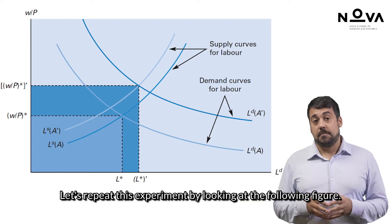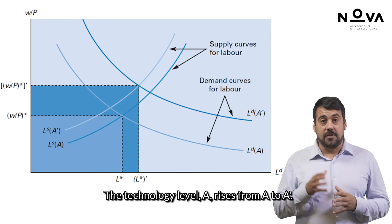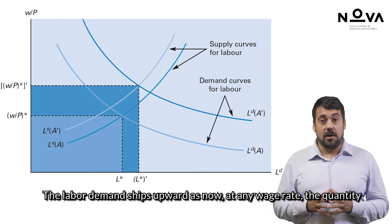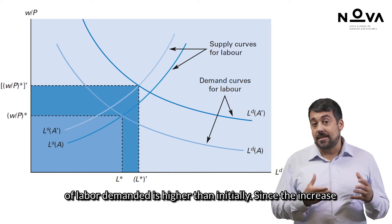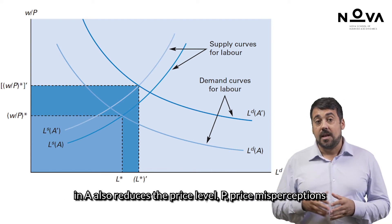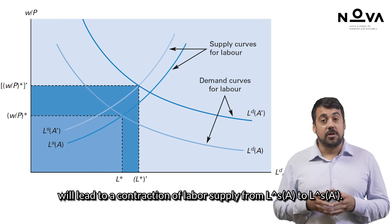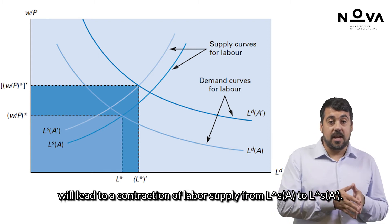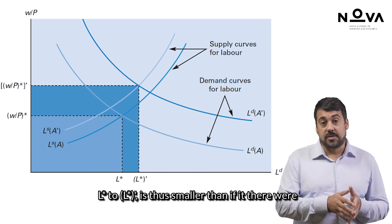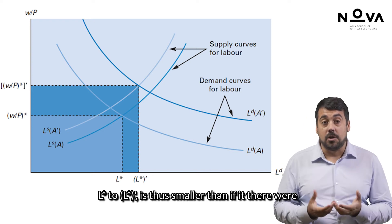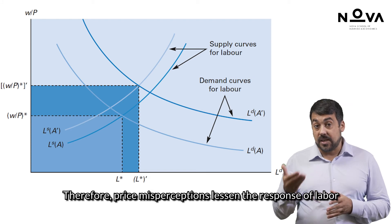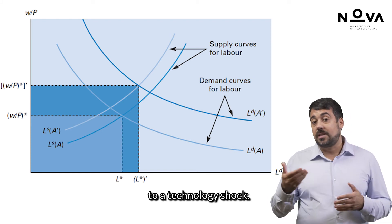Let's repeat this experiment by looking at the following figure. The technology level A rises from A to A prime. The labour demand shifts upward, as now, at any wage rate, the quantity of labour demanded is higher than initially. Since the increase in A also reduces the price level P, price misperceptions will lead to a contraction of labour supply, from LSA to LSA prime. The increase in labour, here depicted as moving from L star to L star prime, is thus smaller than if there were no price misperceptions. Therefore, price misperceptions lessen the response of labour to a technology shock.